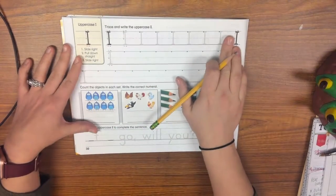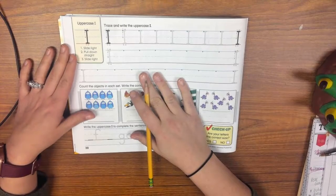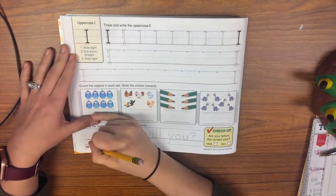Hello kindergarten friends! Today we are going to learn how to make an uppercase I. So make sure to get out your fish handwriting book and go to page 30.